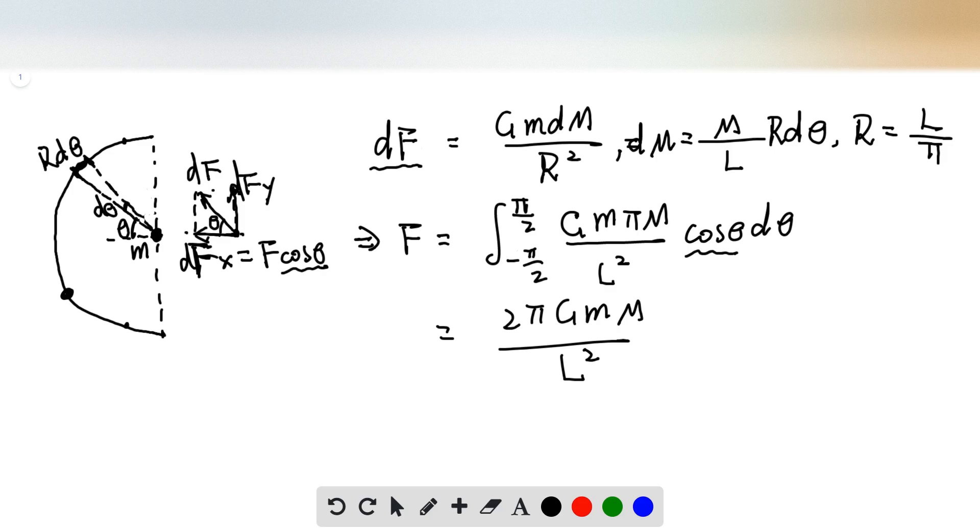The angle range theta comes from, here is zero, here the angle is zero, it has negative, it has positive, so it's from negative pi over 2 to pi over 2.